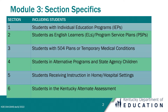There are six sections to the regulation, each concerning a specific topic. They are: 1. Students with Individual Education Programs or IEPs. 2. Students as English Learners or Program Service Plans. 3. Students with 504 Plans or Temporary Medical Conditions. 4. Students in Alternative Programs and State Agency Children. 5. Students receiving instruction in home hospital settings. 6. Students in the Kentucky Alternate Assessment.